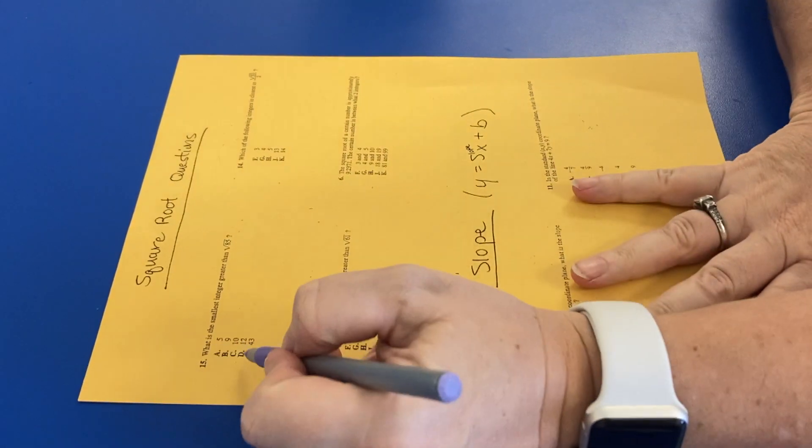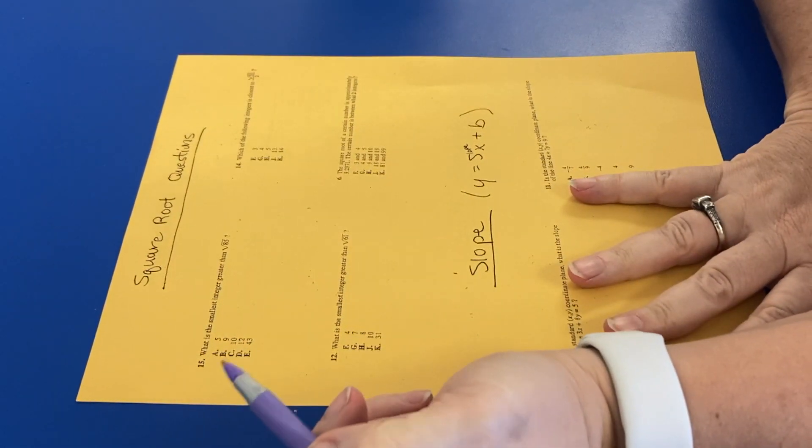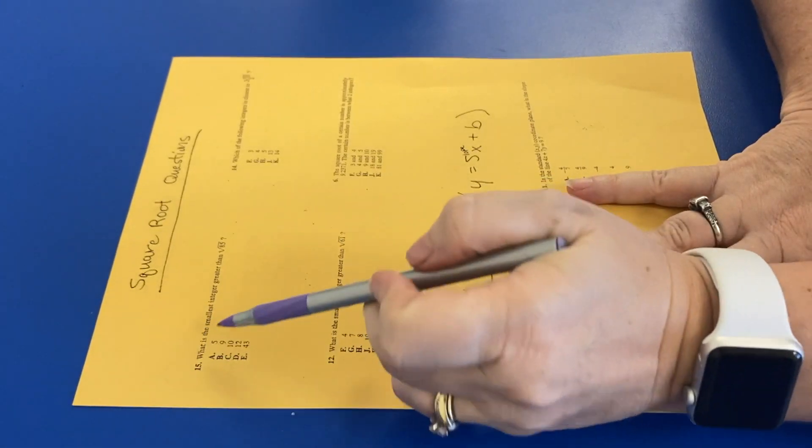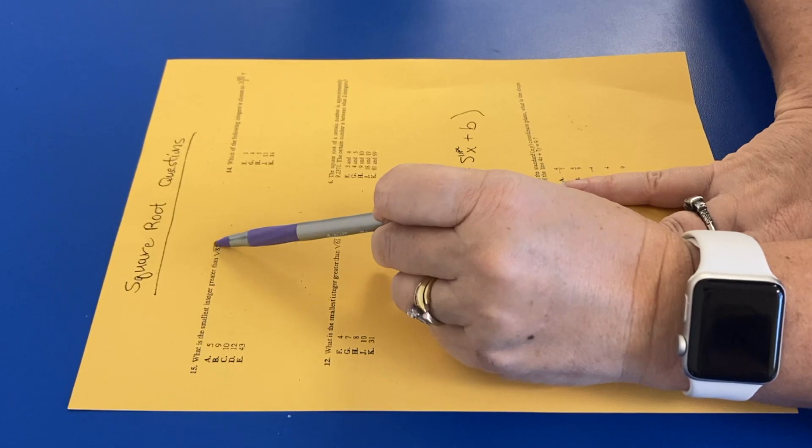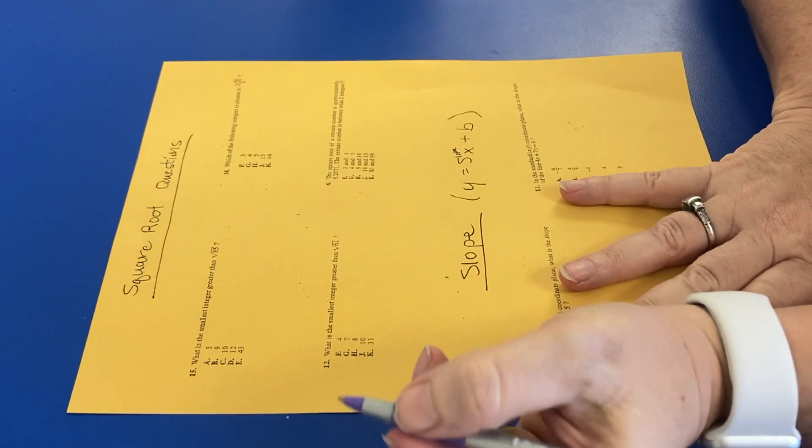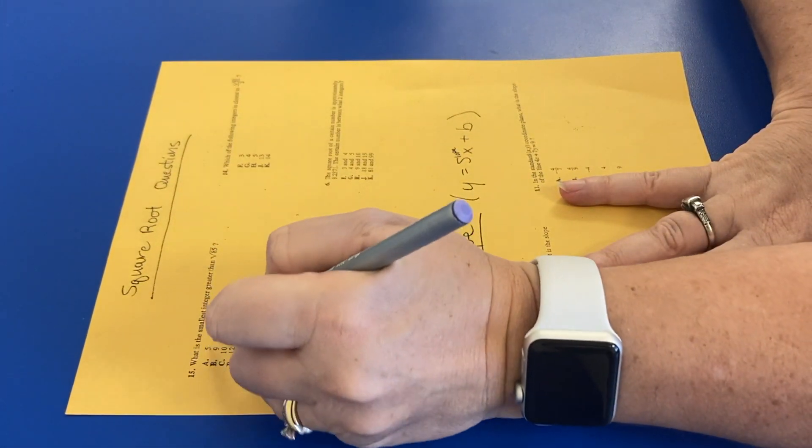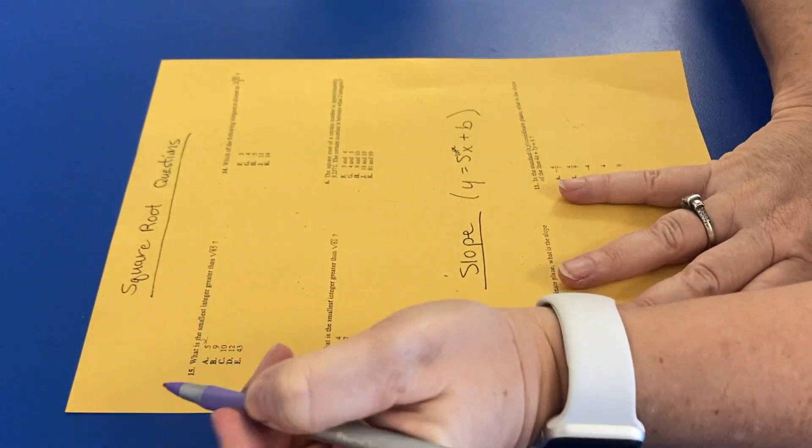All right, now what we're going to be doing is square root questions. These can look intimidating. The question is, what is the smallest integer greater than square root of 85?